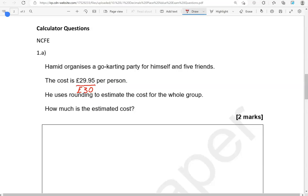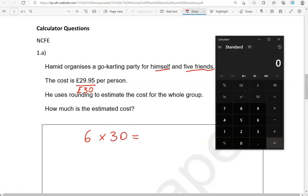And we've got five friends and Hamid, so that is six of them. So we're going to do 6 times 30, which is £180.